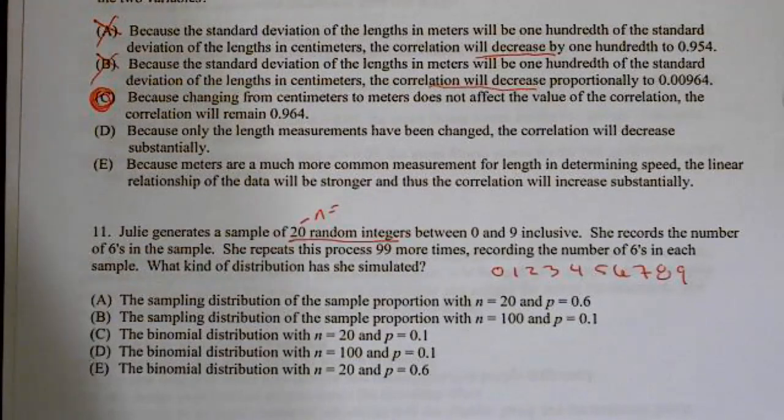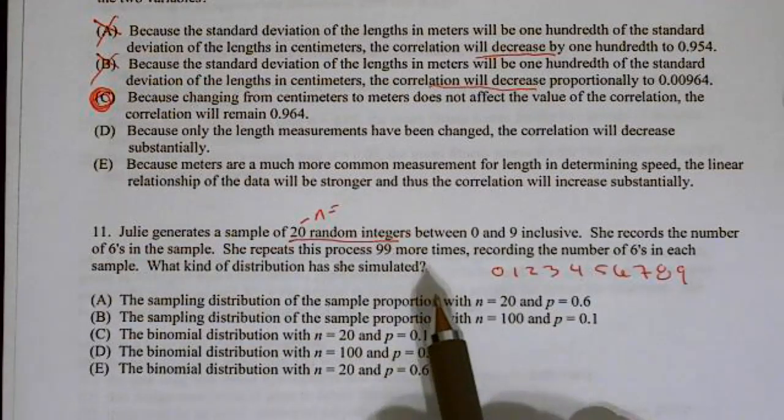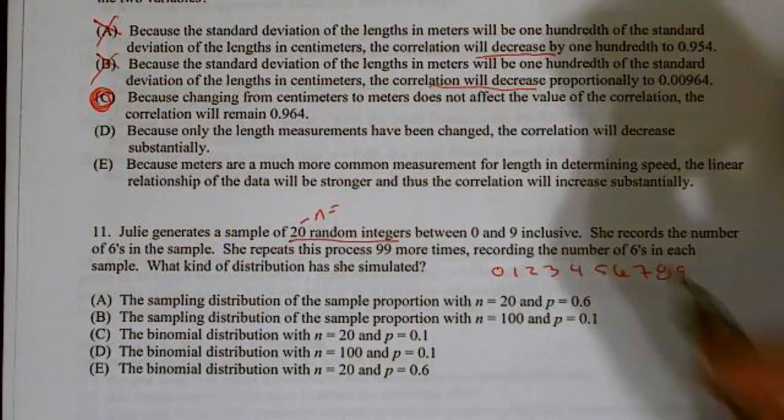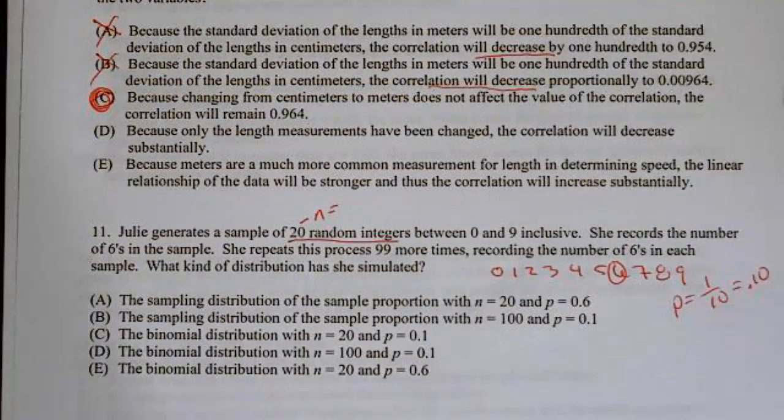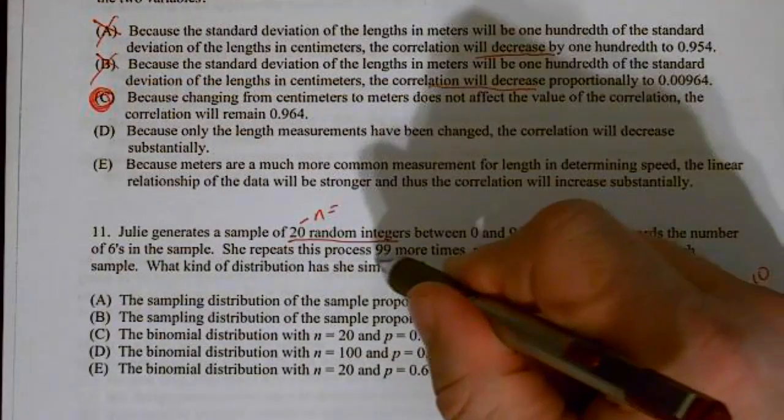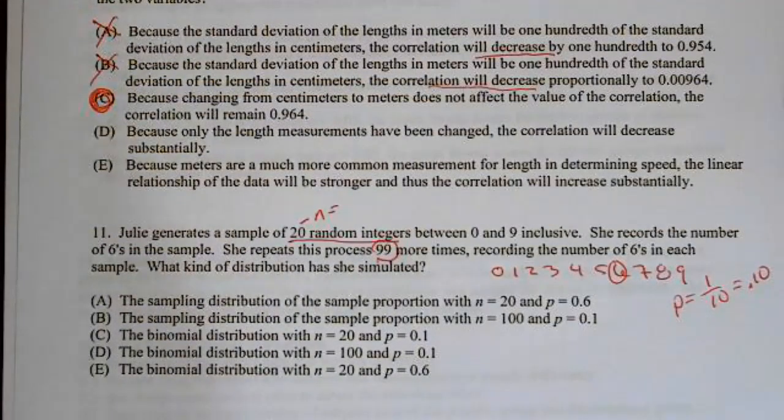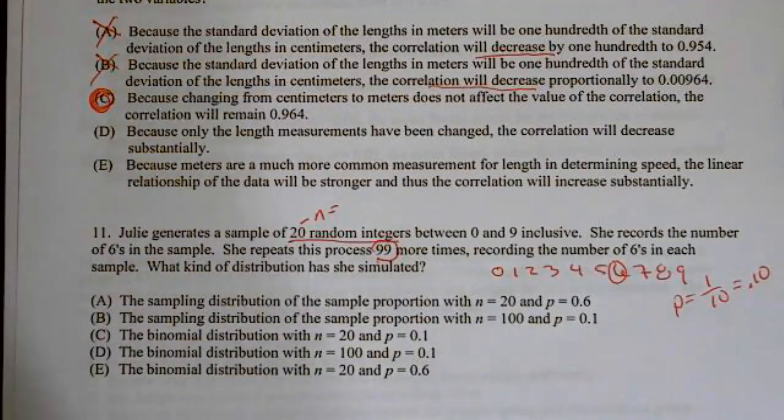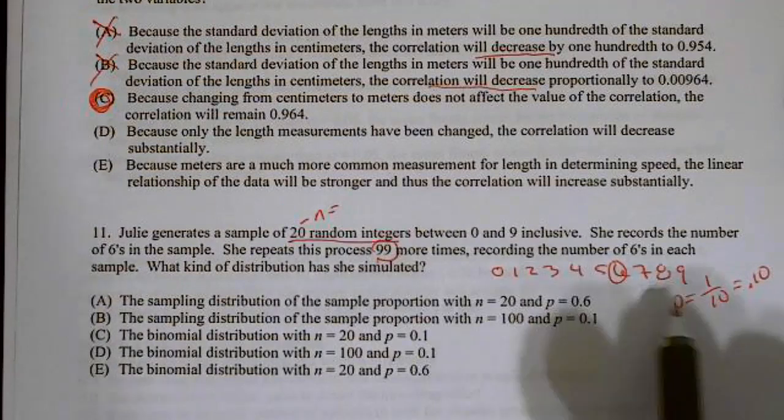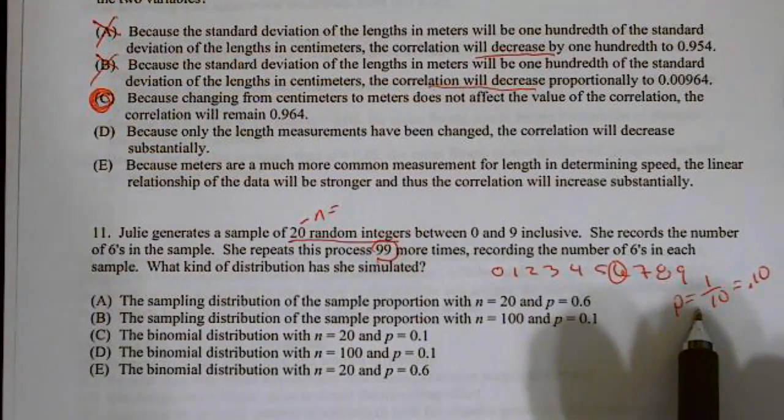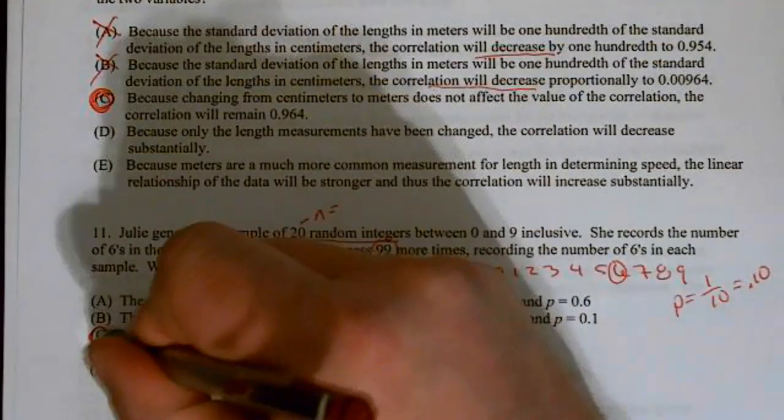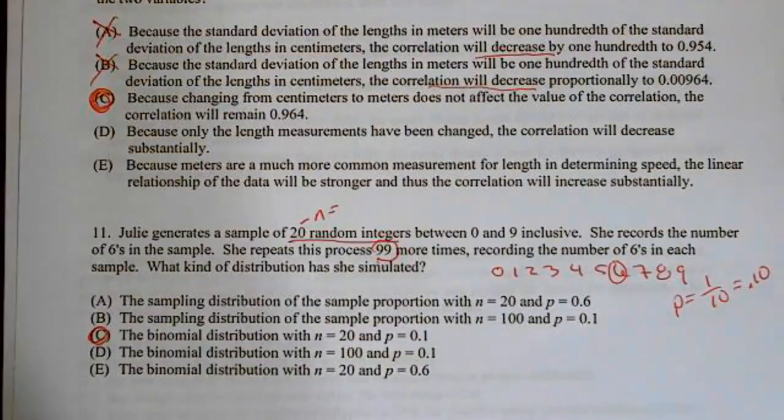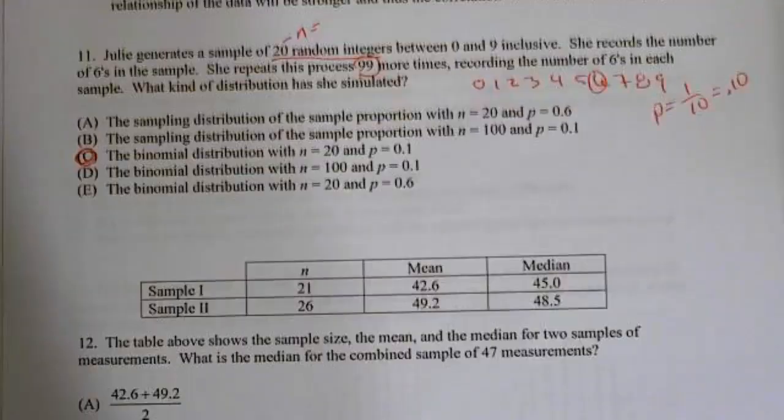Julian generates a sample of 20 random integers between 0 and 9, so they're telling us our sample size is 20. She records the number of 6s in the sample. Well, 0, 1, 2, 3, 4, 5, 6, 7, 8, 9, that's 10 values, and the probability of getting a 6 is 1 over 10 or 0.10. She repeats this process 99 times. So that's our number of trials. What kind of distribution? Well, we have a fixed sample and we have a fixed probability. So this is a binomial distribution with a sample size of 20 and a probability of 0.1. The answer to number 11 is C.